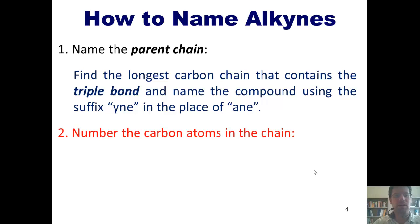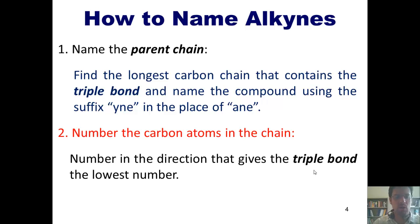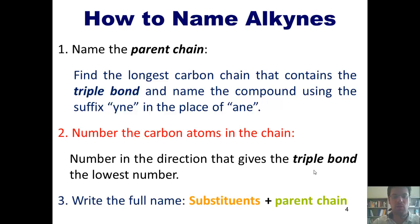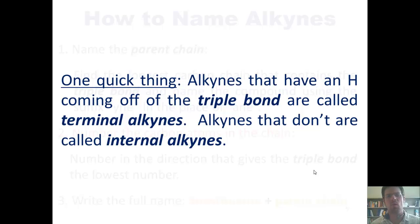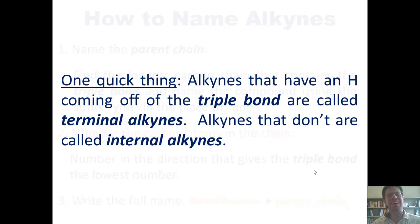Next, we number the carbon atoms in the chain, numbering in the direction that gives the triple bond the lowest number, assuming there are no other functional groups of higher priority. Lastly, we write the full name, placing the substituents at the beginning and the parent chain name at the end. Parenthetically but importantly: alkynes that have a hydrogen coming off of the triple bond are called terminal alkynes, while alkynes that don't are called internal alkynes.